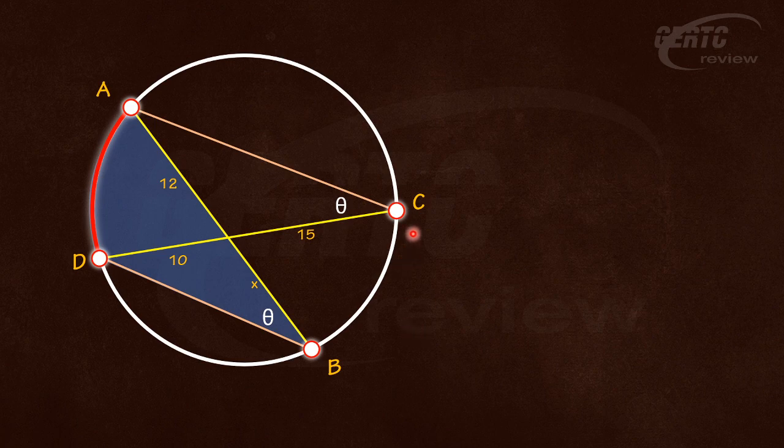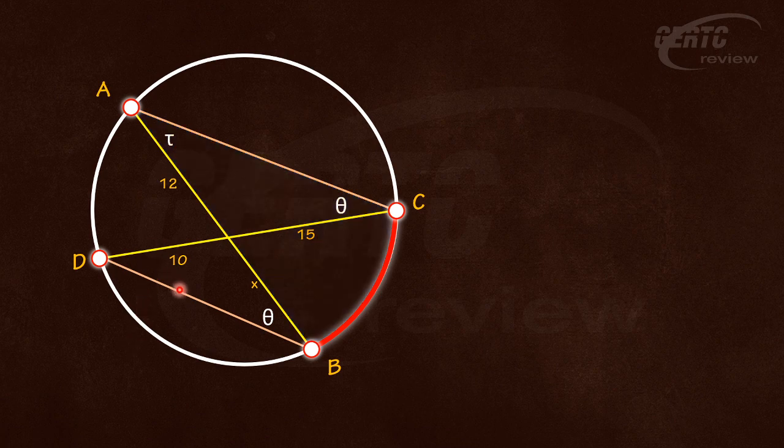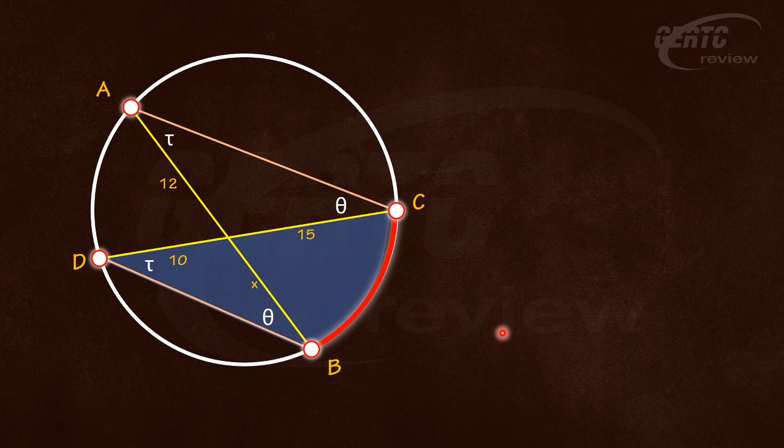Now let's go to the other opposite arc BC. The inscribed angle of that one is this one, let's call it τ. And another is this one, so this should also be τ.